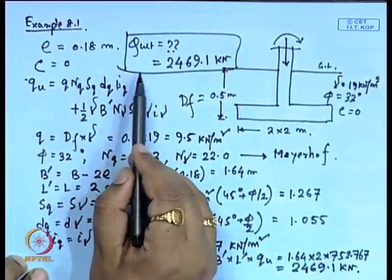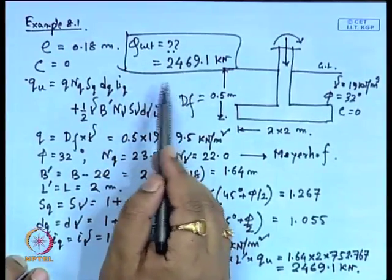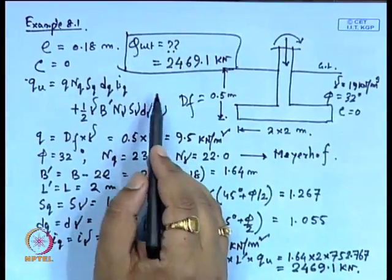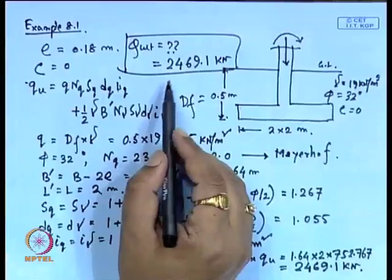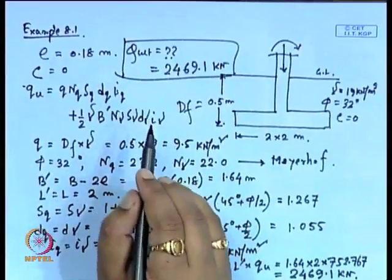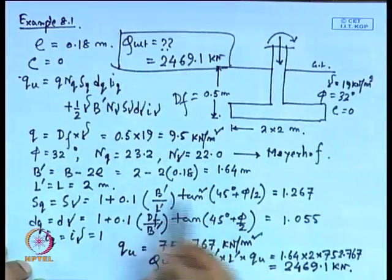To find the net safe bearing capacity or ultimate safe bearing capacity, a factor of safety must be applied as discussed previously. In this way, we can determine the bearing capacity for eccentrically loaded footings. In the next class, we will discuss bearing capacity for layered soils and for foundations on slopes. Thank you.